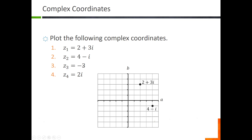The third example is negative three. Since there's no i component, you can think of it as negative three plus zero i, so you just go three units to the left — negative three sits on the real number axis. And two i has a zero real part, like zero plus two i, so it's zero in the real direction and two units up the imaginary axis.